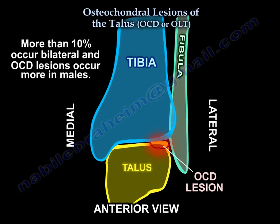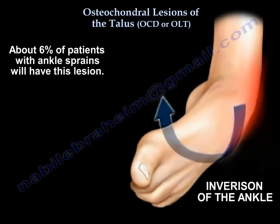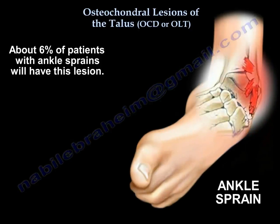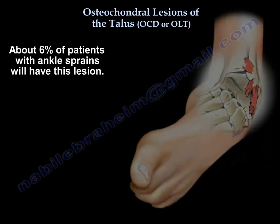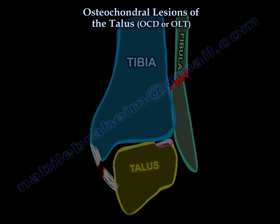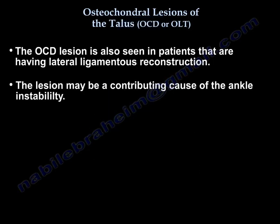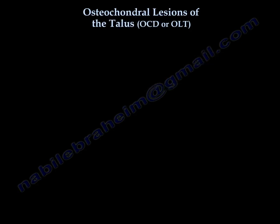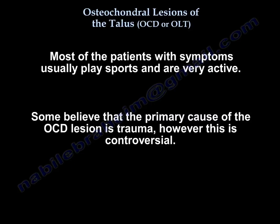More than 10% of cases are bilateral, and it is more common in males. About 6% of patients with ankle sprain will have the lesion, and a lot more patients will have the lesion if they have an ankle fracture. The lesion can also occur in patients undergoing lateral ligamentous reconstruction, and that may be a contributing cause for ankle instability. Most patients with symptoms are very active in sports.